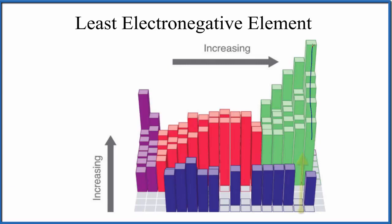And we can see, as we go up a group, electronegativity increases. And as we go across, electronegativity also increases.